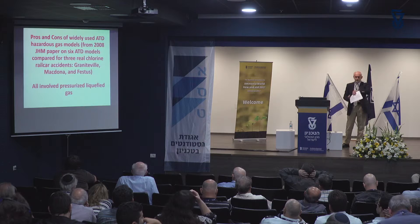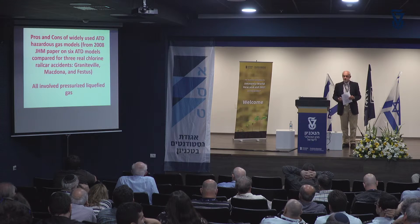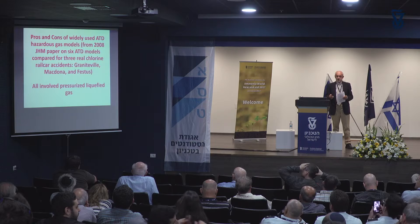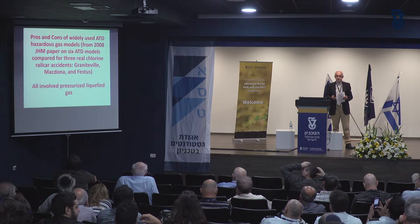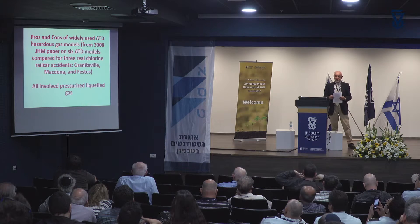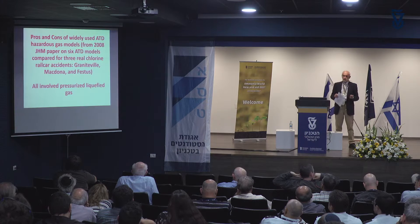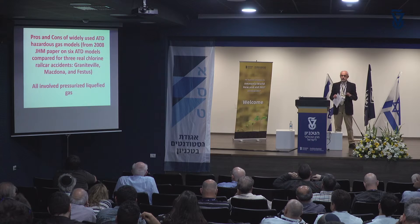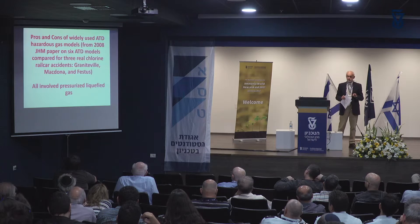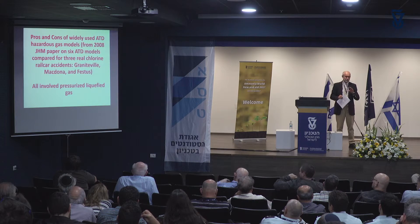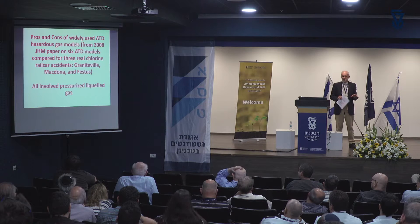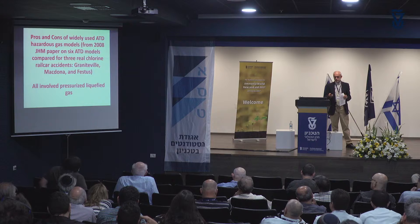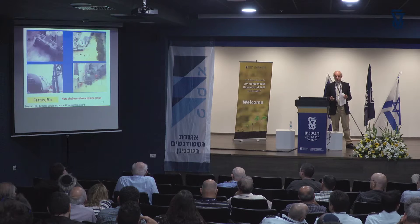I'm going to cover some of the widely used dispersion models, drawing from a paper I wrote about ten years ago where six widely used models were compared for three big rail car accidents involving chlorine — Graniteville, McDonough, and Festus — all involving pressurized liquefied gas in a rail car.